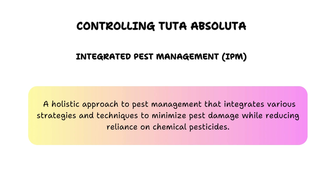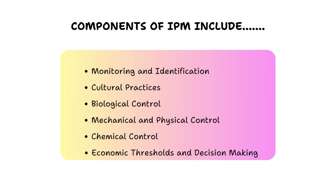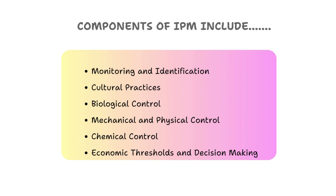When controlling Tuta absoluta populations, it's prudent to use Integrated Pest Management (IPM) — a holistic approach that aims to minimize pest impact while promoting sustainable and environmentally friendly practices. Key components of IPM include monitoring and assessing pest populations, implementing preventive measures, promoting natural enemies, utilizing biological controls, and employing targeted pesticide applications only when necessary. IPM seeks to balance effective pest control with economic viability, environmental protection, and social responsibility.